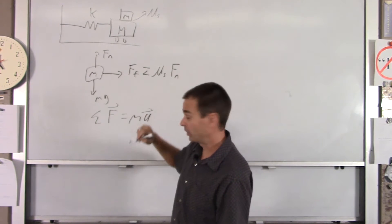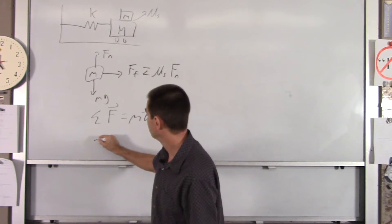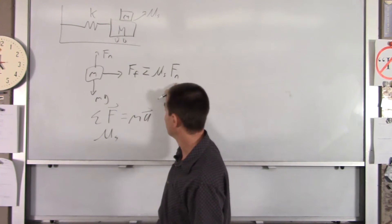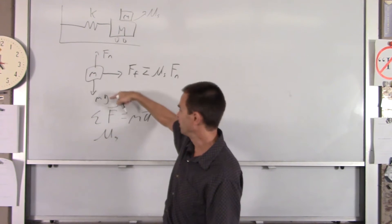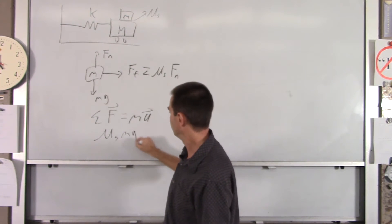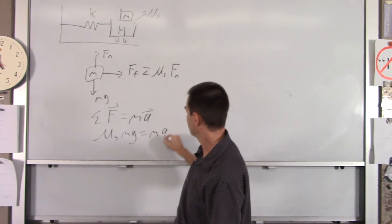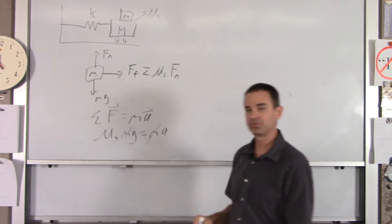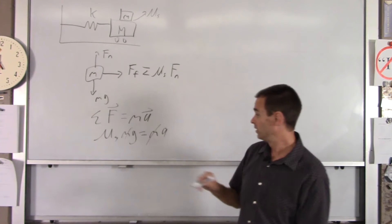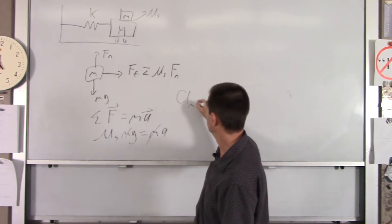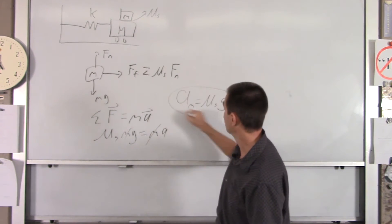Well, the only force that accelerates him is the force of friction, which is mu sub s times Fn. And in this problem, Fn is going to equal little mg, and that equals little ma. And the m's drop out, and you just found your max acceleration.